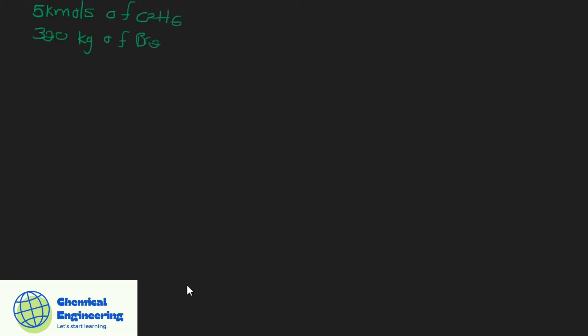The next step is to work with ratios in the form of kilomoles. So we will have to convert bromide into its mole quantity from mass to moles. Now that we have our bromide in kilomoles, let us use ratios in order to determine the limiting reagent.